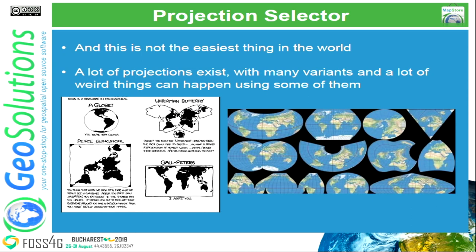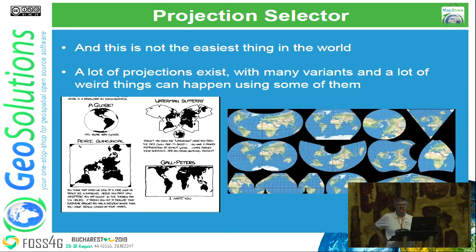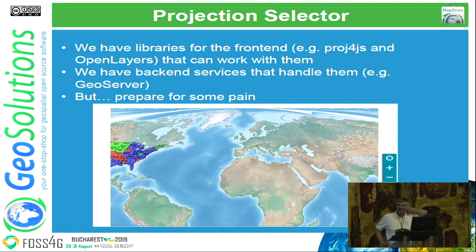This is not very easy — this is the reason why we are exposing this functionality just now. There are a lot of libraries both on the server side and the client side to work with projections and convert coordinates. For JavaScript we have proj4js, which is the equivalent of proj4 in the back-end world; OpenLayers is also well integrated with these libraries. We also have back-ends like GeoServer that can work with many different projections, but anytime you choose something other than Web Mercator or WGS84, prepare for some pain.